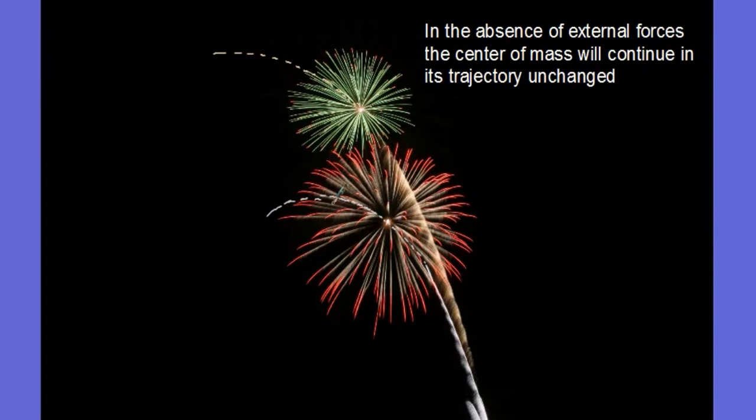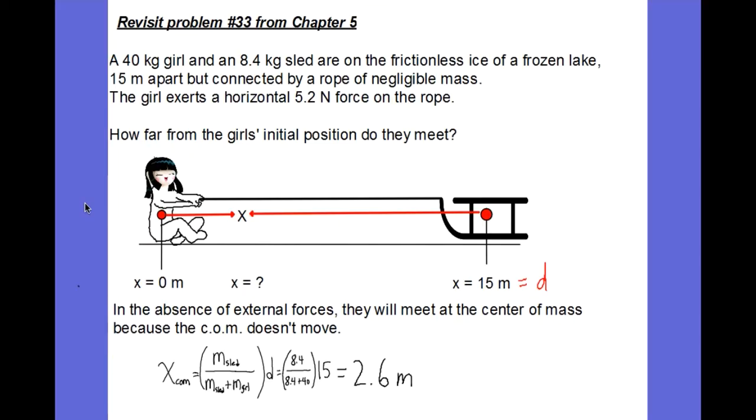Along these dotted lines that I've drawn here, that's the center of mass of each firework. That position in space will continue to move in the parabolic trajectory that it was originally moving in before the firework exploded. And if the center of mass was not moving to begin with, then it will remain at rest in the absence of external forces.